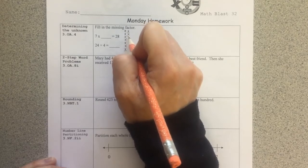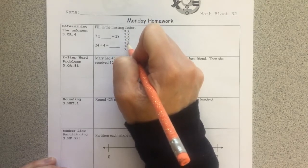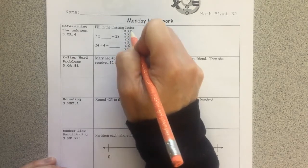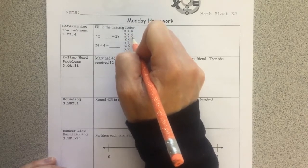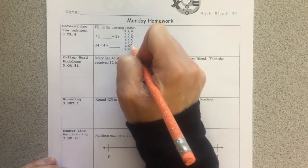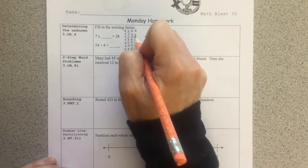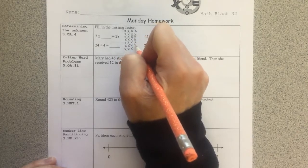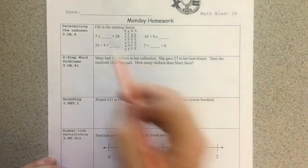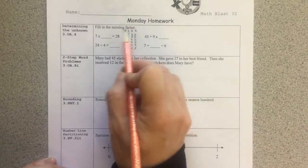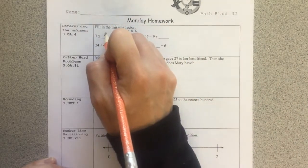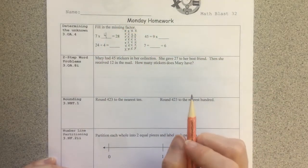I have 7 rows here. I'm going to continue to put an x in each row or each group here until I get a total of 28 x's. I'm at 21 now. And there is 28. So I have 7 groups and there are 4 in each group. 7 times 4 equals 28.